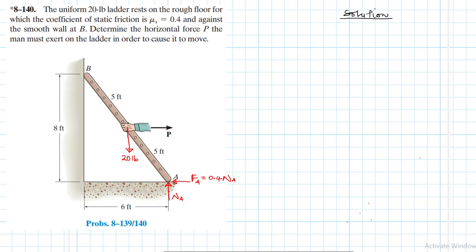Let me indicate the slope I'll use when applying the equations of equilibrium. The horizontal component is 6, the vertical component is 8. Then 8² = 64 plus 6² = 36, and 36 + 64 = 100, so the square root of 100 is 10. The hypotenuse is 10, giving us a 6-8-10 triangle.